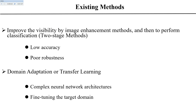At present, there are two main ways to solve this problem. One solution is to first improve visibility by image enhancement methods and then perform classification. However, this kind of method often has low accuracy and poor robustness. Another feasible solution is to transform it into a domain-adaptation problem. While promising, most existing domain-adaptation approaches require either complex architectures or finding the target domain.